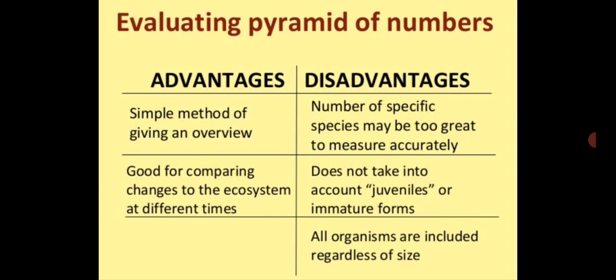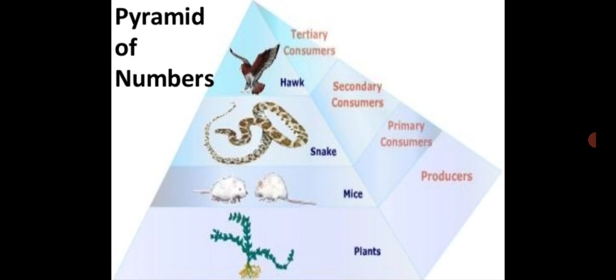The disadvantage of pyramid of numbers is that the number of specific species may be too great to measure accurately. It does not take into account the juveniles or immature forms, and all organisms are included regardless of size. The pyramid can also appear inverted, where the number of primary consumers — herbivores — which feed is always greater than the number of primary producers.